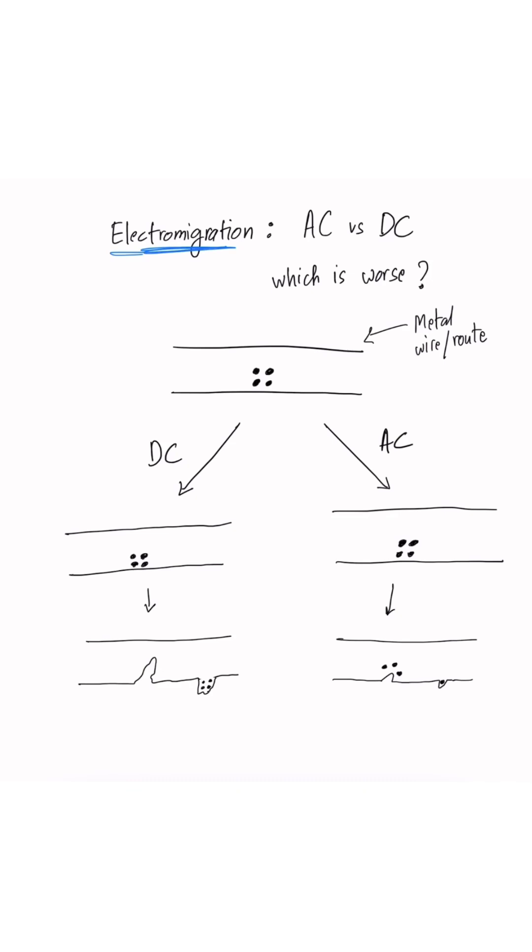Let's take a look. We know that EM happens when, due to high current densities, electrons displace the metal atoms in the metal wires.